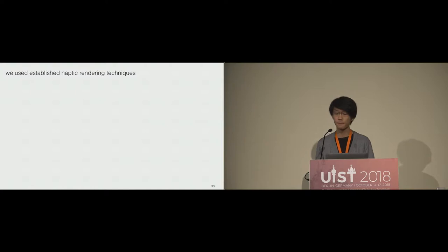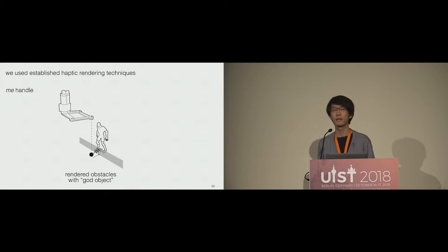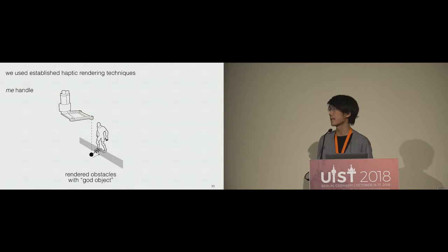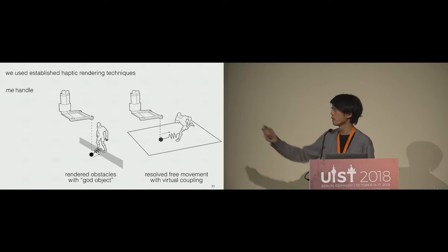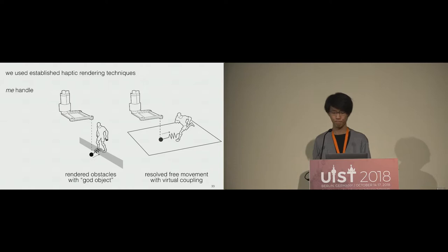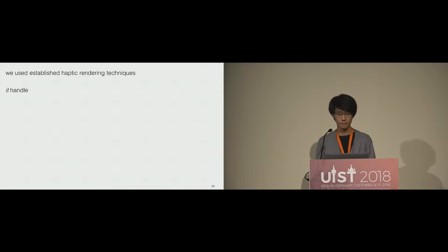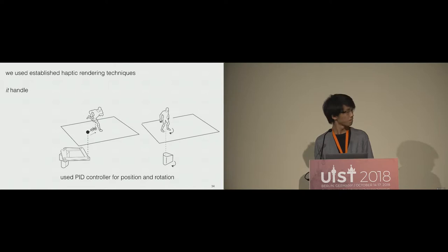For haptic rendering techniques, we utilized existing approaches. For the me handle, we used god object techniques, which allow rendering walls, curvatures, and polygons of complex shapes on virtual surfaces. We also used virtual coupling techniques to render objects away from the end of the me handle. For each handle, we used simple PID controls for position rendering and rotation rendering.